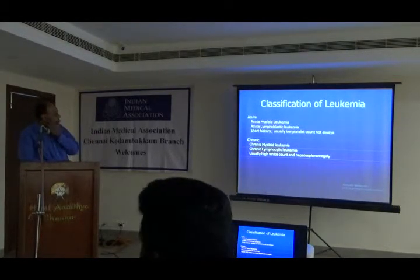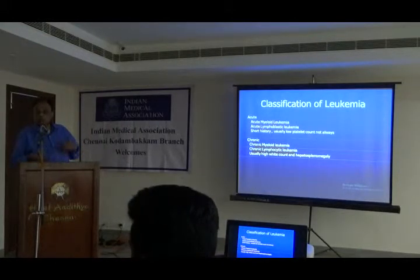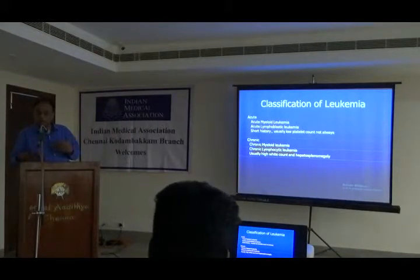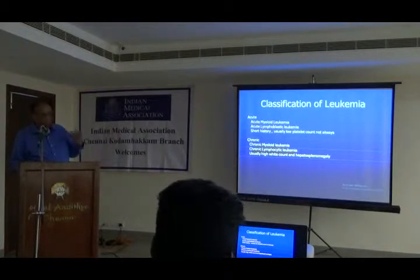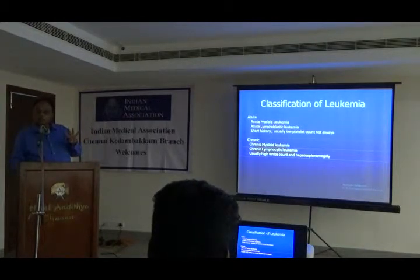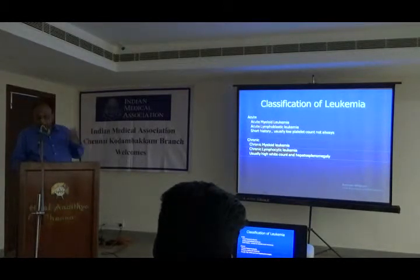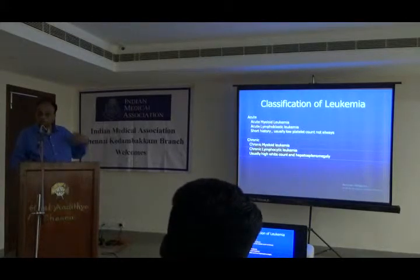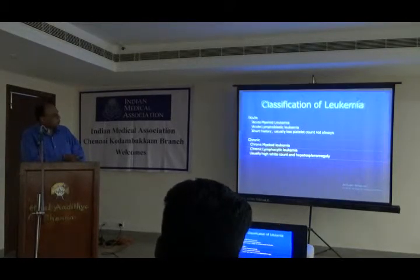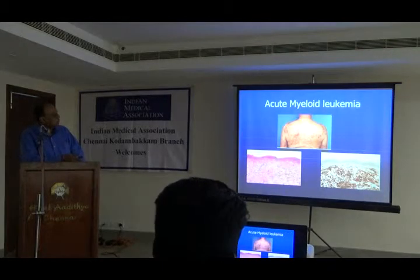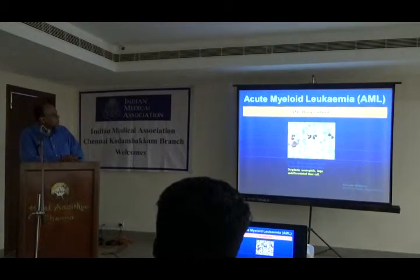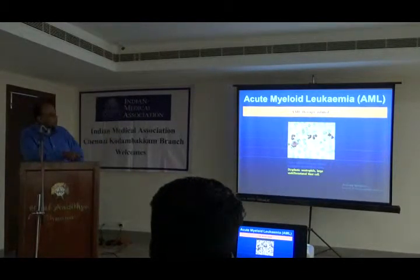Leukemias can be classified as acute myeloid or acute lymphoblastic leukemia — presenting quickly with low platelets, bleeding, and anemia — or chronic, such as CLL or chronic myeloid leukemia, presenting with big spleen, lymph nodes, fever, weight loss, and night sweats over a longer period. In acute leukemia you need to act quickly; in chronic leukemia there is more time. A blood film may show blast cells resembling immature cells.